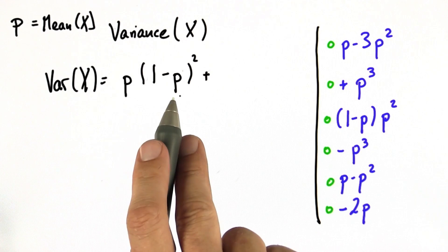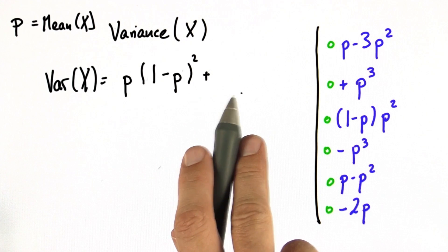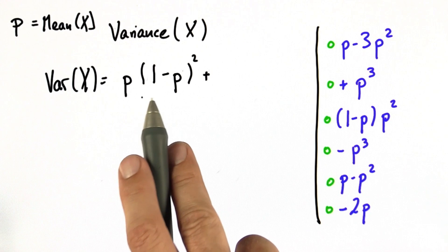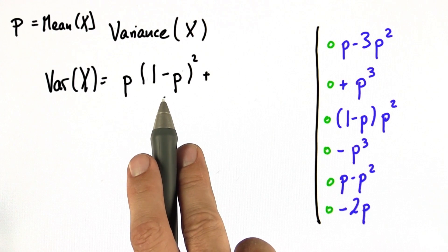Complete the same expression for the tails case. So what's the probability of tails? And if tails actually occurs, so the outcome is zero, what will be the quadratic deviation you put into this formula over here?